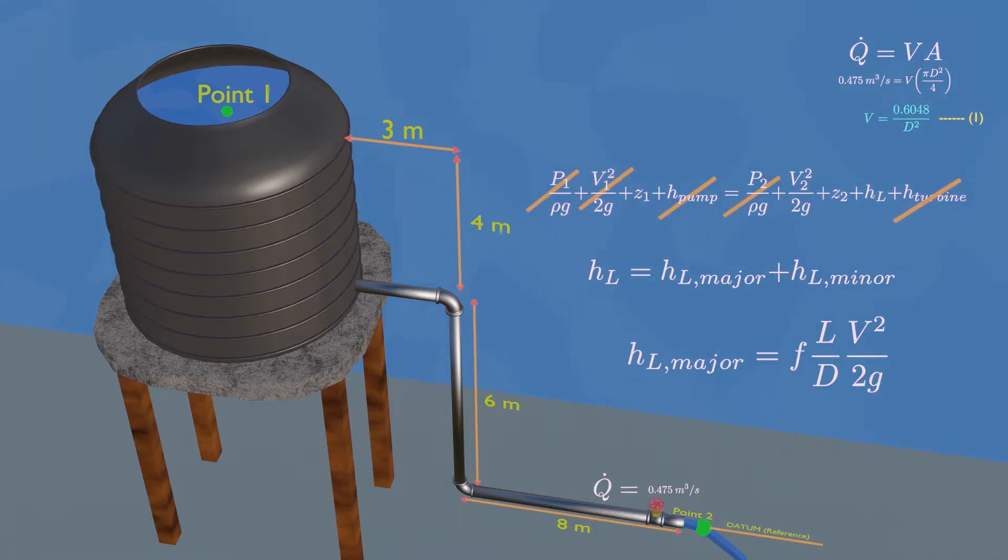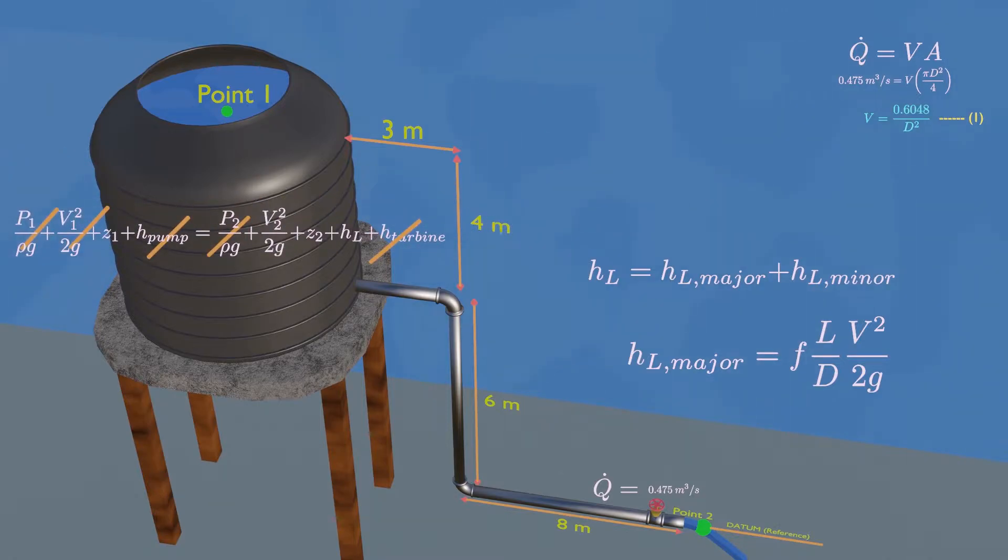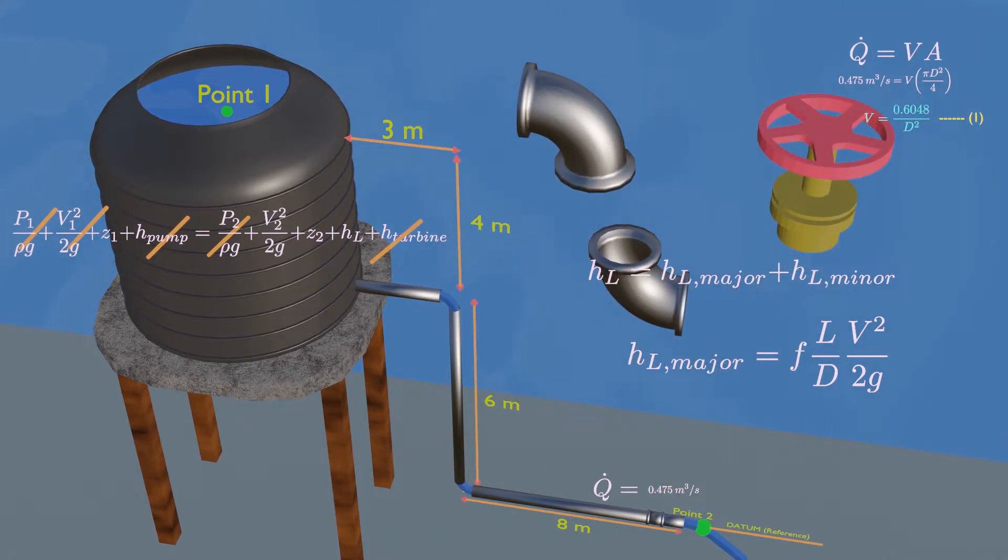In addition to this, head losses also occur at pipe connections, such as bends, fittings, entrances, and transitions. These are called minor losses.